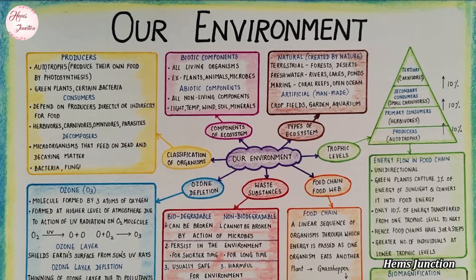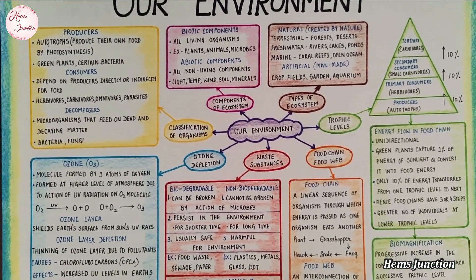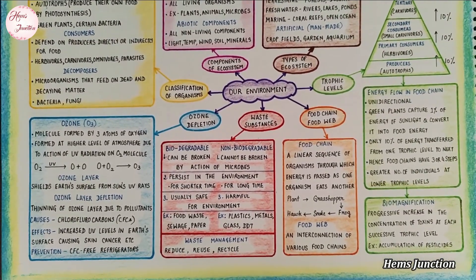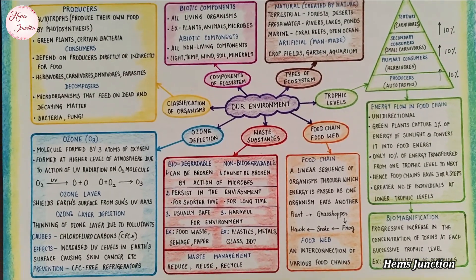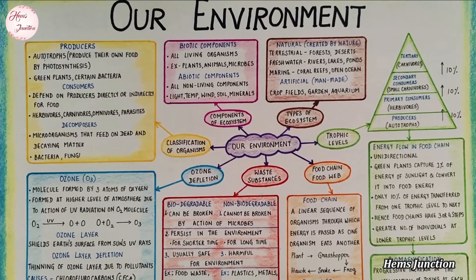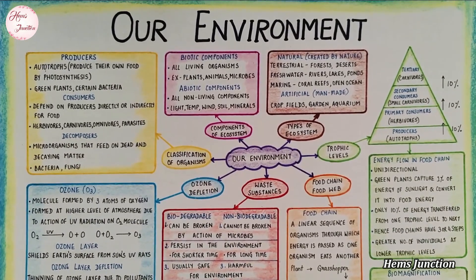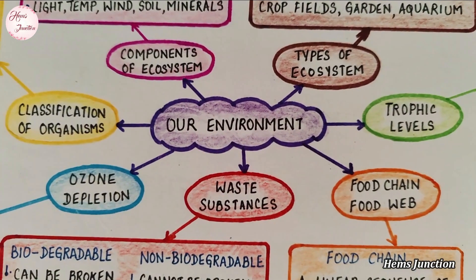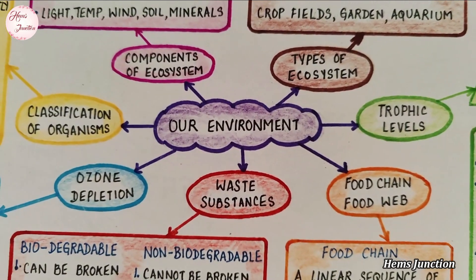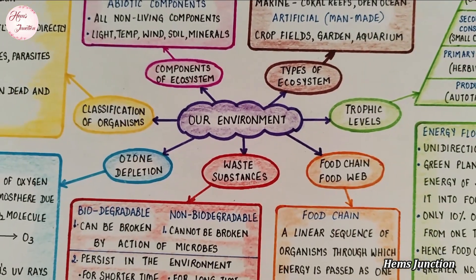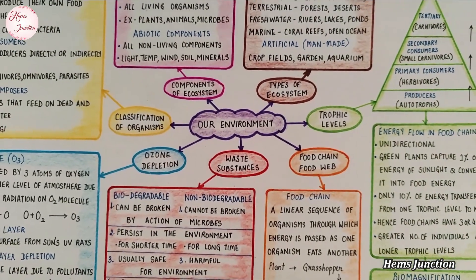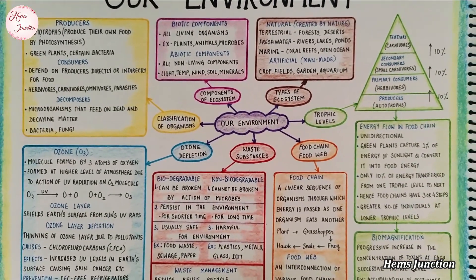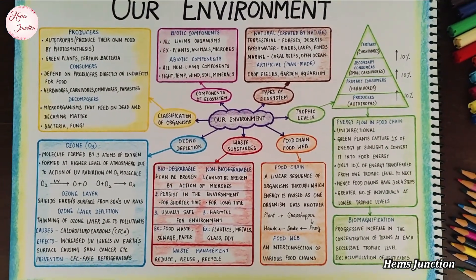Here is the complete mind map of the chapter Our Environment. Environment is everything that is around us, which includes both living and non-living things. All organisms in an area, together with non-living factors of environment, interact with each other to maintain balance in nature. This system is called ecosystem.